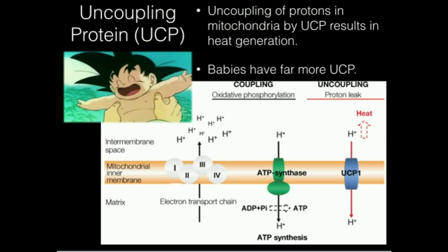The reason that's done is because when hydrogen ions move through here, they move with a lot of kinetic energy. As the hydrogen ions move through, that kinetic energy dissipates as heat. So if you have a lot of mitochondria, a lot of uncoupling protein, and a lot of proton gradient, you can create a lot of heat.